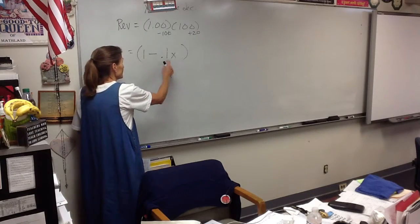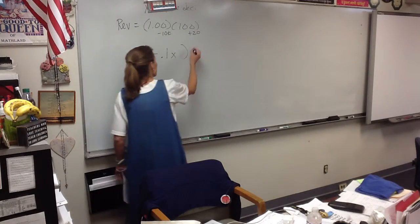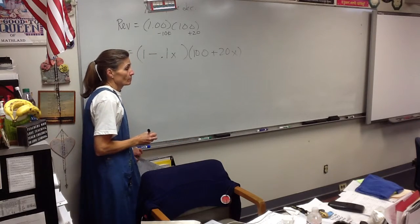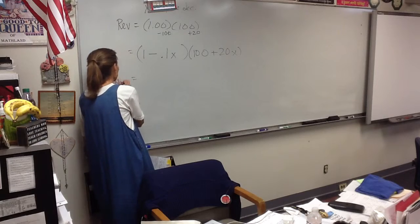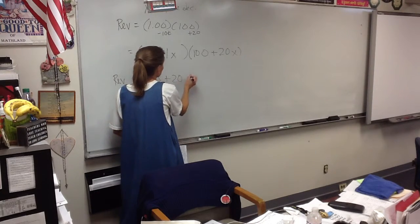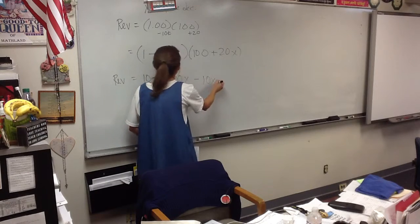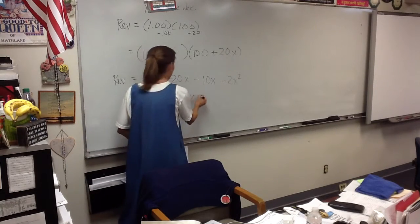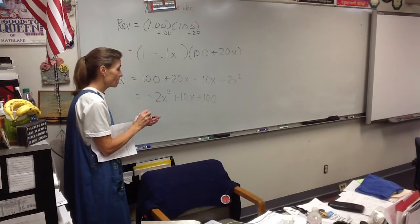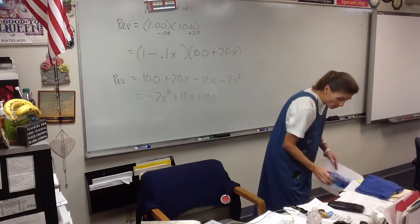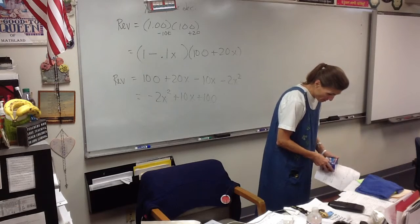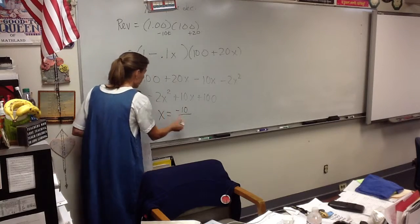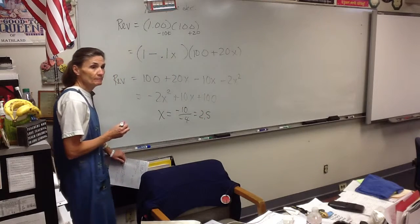So what is my new price going to be? If I decrease x times, what will this price be? One minus .1x. Now, how many am I selling? A hundred plus 20x. Now, if I were to FOIL this out, what am I interested in knowing? The vertex, the maximum. So I want to find the vertex.